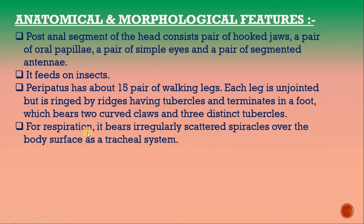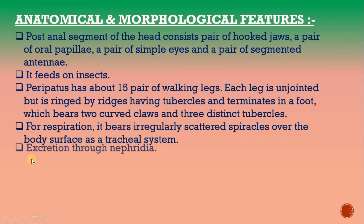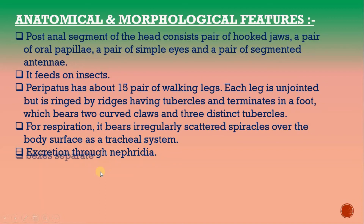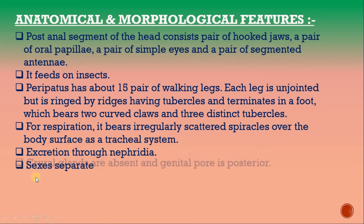For respiration, it bears irregularly scattered spiracles over the body surface as part of a tracheal system. Excretion occurs through nephridia.